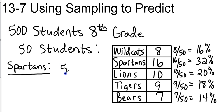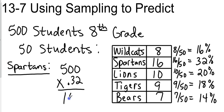We're going to take 500 students and multiply by our percentage converted to a decimal, so 500 times 0.32, and that gives us 160 students. From our sampling of 50, we can estimate that probably 160 of our 500 students would vote for that particular mascot.